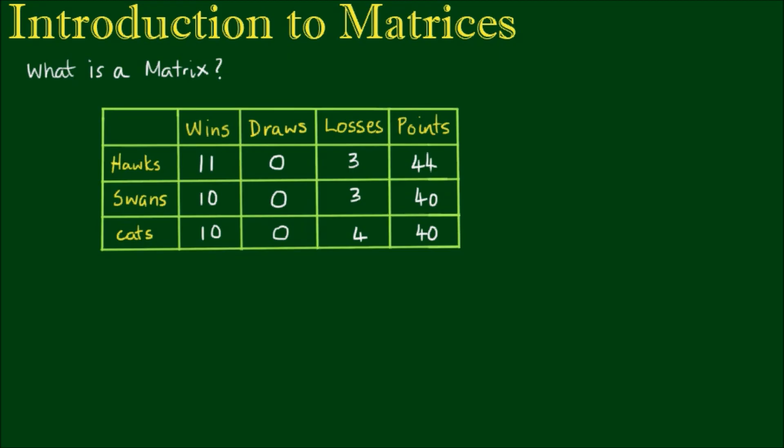We've all seen a table of numbers. What I have here is the top three teams in the Australian Football Premiership. This table is current as of the 30th of June 2016.